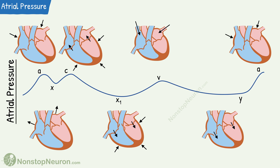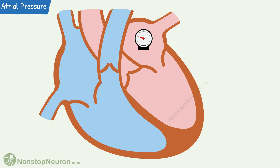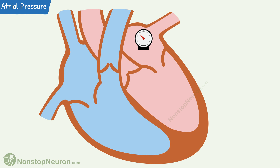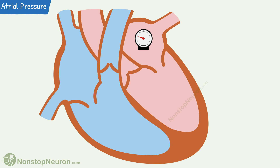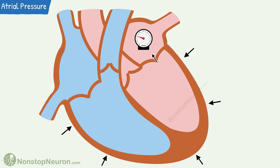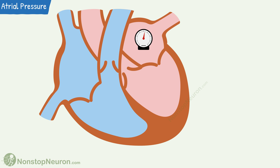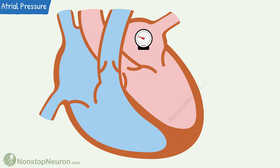So this is all about pressure change in the atria during a cardiac cycle. Quick summary: atrial systole causes a rise in pressure; the onset of atrial diastole causes a fall in pressure; during isovolumetric contraction of ventricles, closure of atrioventricular valves and their bulging into the atria causes a rise in pressure; during the ejection phase, pulling of atrioventricular valves into the ventricles produces a fall in pressure; gradual filling of blood into the atria causes a rise in pressure; and during rapid ventricular filling, rapid exit of blood causes a fall in pressure.